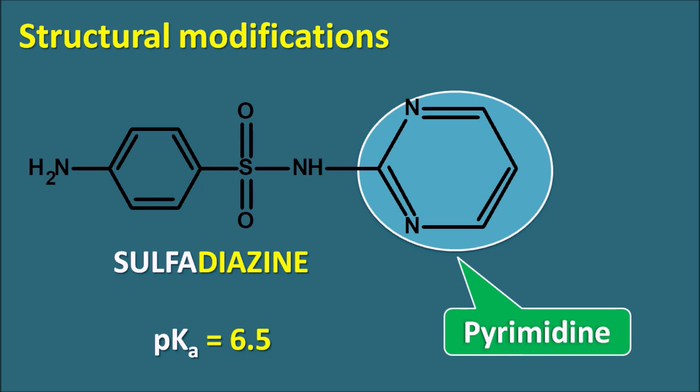In summary: sulfonamide (the first sulfonamide developed) has a pKa ~10 and produces crystals in the urine. Crystalluria can be minimized by large fluid intake, structural modifications, urinary alkalizers like sodium bicarbonate, or mixing different sulfonamides. Structural modifications that bring the pKa closer to urinary pH are the most preferred approach for minimizing crystalluria.